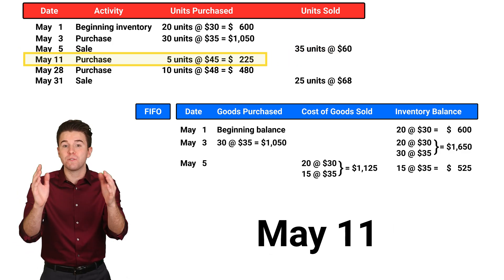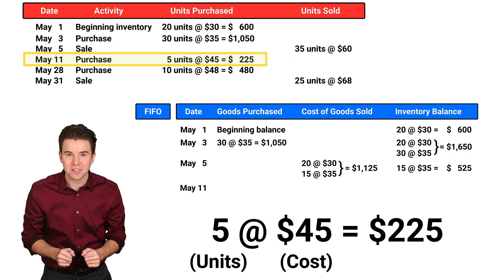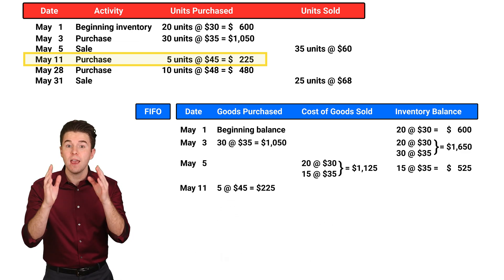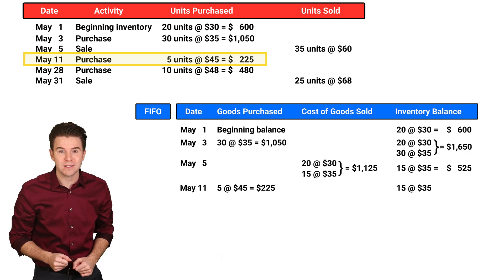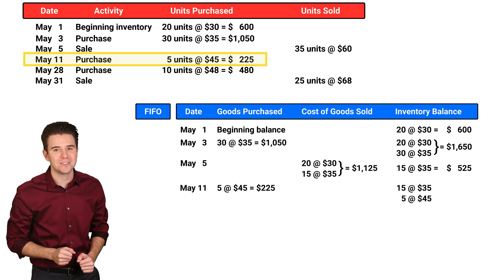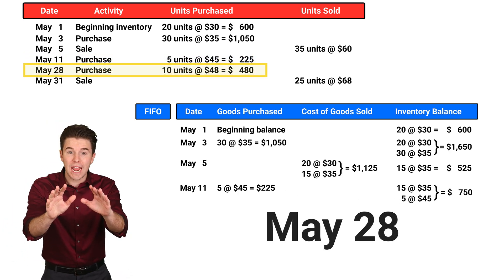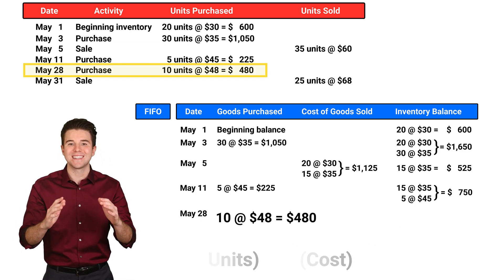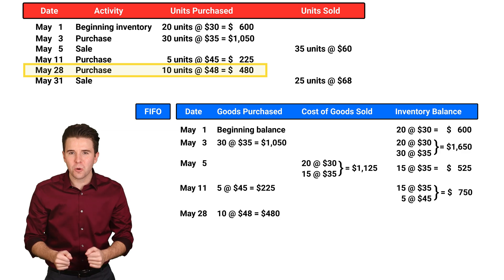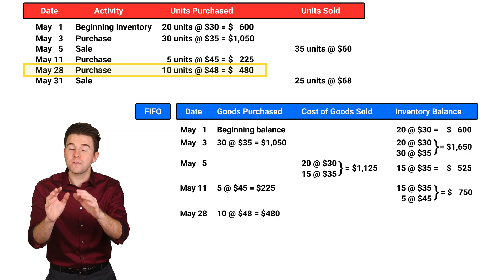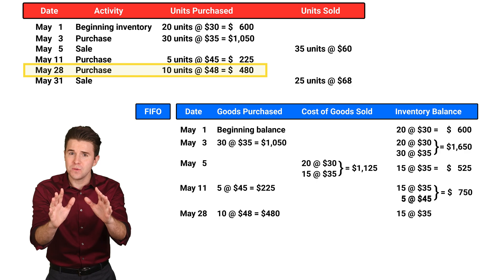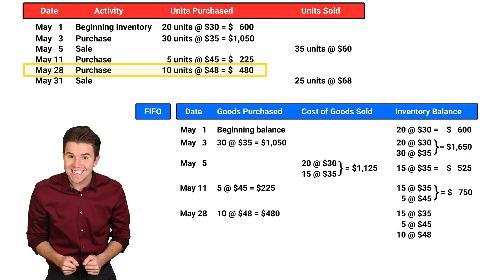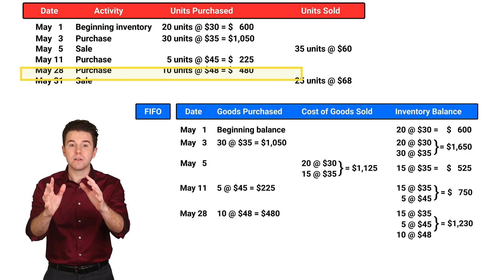On May 11th, we purchased 5 units at $45 per unit. Now looking at our inventory balance, we see 15 units at $35 each and 5 units at $45 each. On May 28th, we purchased 10 units at $48 per unit. Looking at our inventory balance, we see 15 units at $35, 5 units at $45, and 10 units at $48.